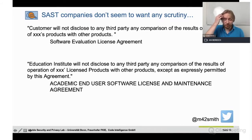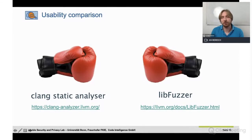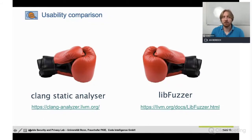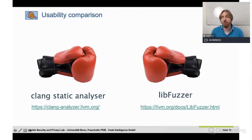We considered doing it anyway, but in the end decided to stay on the legal side of things and reduced our study to two products. We took the Clang static analyzer — probably one of the most popular open source static analyzers, baked into the Clang toolchain. People we talked to said it was one of the better tools they'd used. On the other side, we used libFuzzer. We talked to a whole bunch of fuzzing users to figure out which was used the most, and that turned out to be libFuzzer.